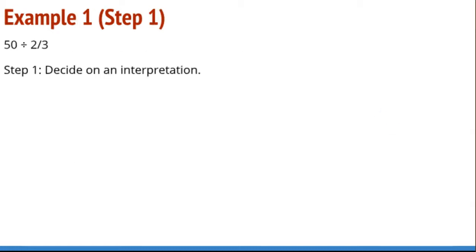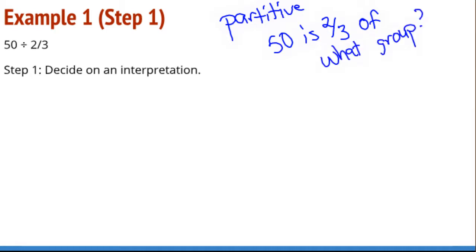Taking a look at example 1, 50 divided by two-thirds, and we are going to go with a partitive interpretation. That is going to tell us 50 is two-thirds of what group. Because remember in partitive division we are answering the question, what is the size or the value of a group. So 50 is two-thirds of what group.